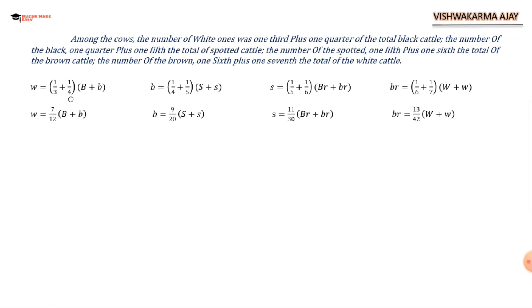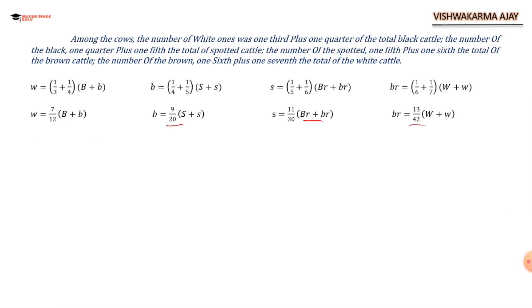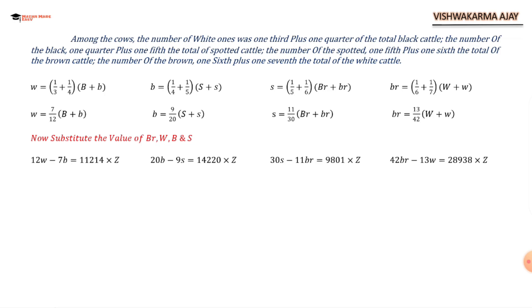That gives us 7/12 for the white coefficient and similarly for the other three. From the previous equations we have the values of Br, W, B, and S. I am going to substitute all of those into the cow equations. So we have: small w = 11214z + 7b/12.